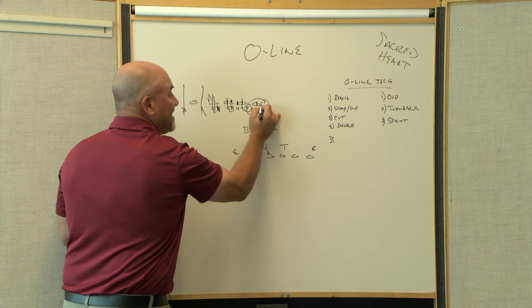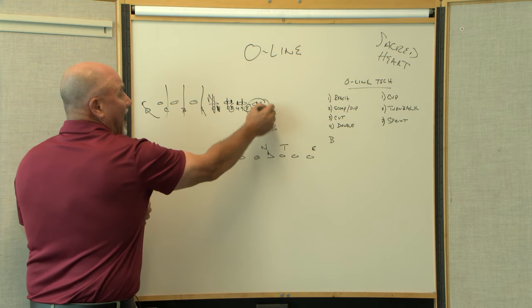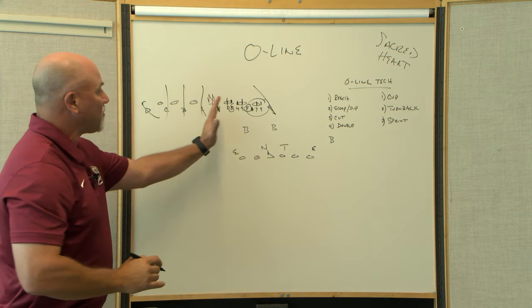On the tight end, you have a seven and a wide or a wide nine. You see the Eagles play sometimes a wide nine rush from the outside. And then an inside would be an eight. So that's what we call.